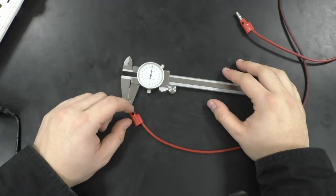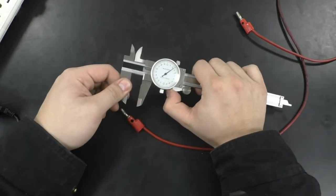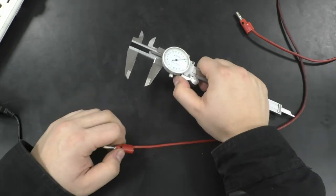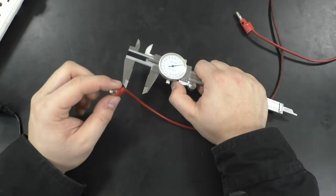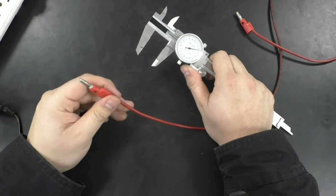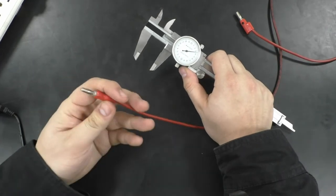Now that our caliper is calibrated properly, we can begin taking our measurement. Open up the jaws of the caliper and place the object that you want to measure in between. For this example, we will be measuring the width of this red wire.